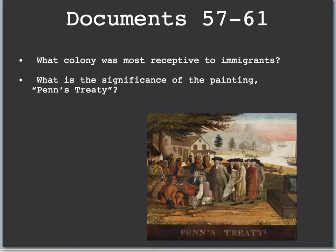Which colony was most receptive to immigrants? It was definitely Pennsylvania. Looking at the painting Penn's Treaty found in your book, William Penn is negotiating and trading with Native Americans. That is significant because it shows that Pennsylvania probably had the best relations with Native Americans. But eventually that changed as more and more people in Pennsylvania had to move west and encroach on Native American land.